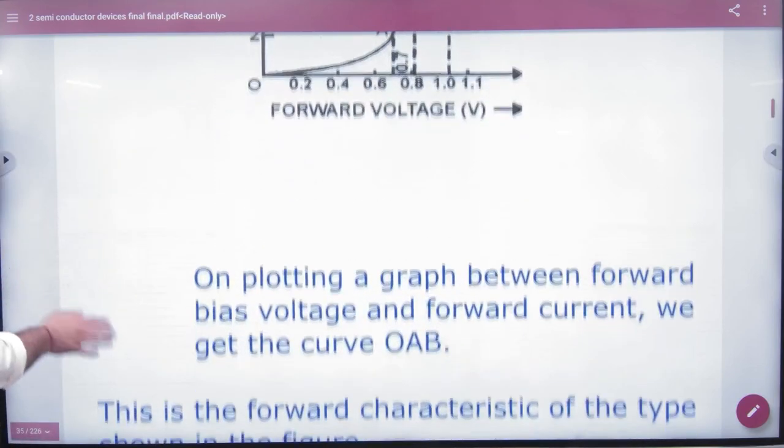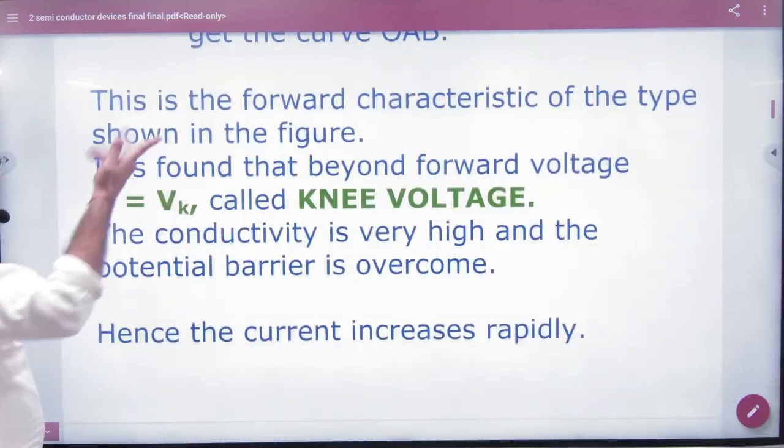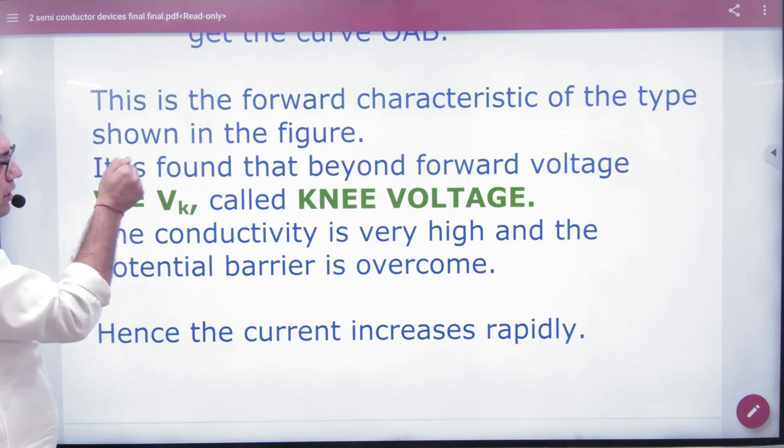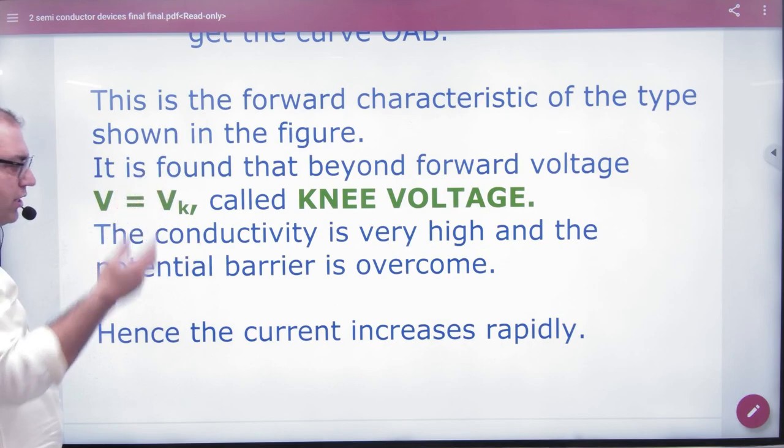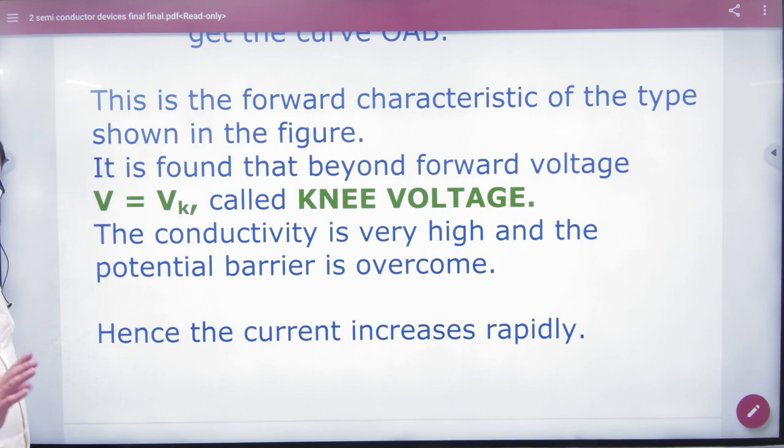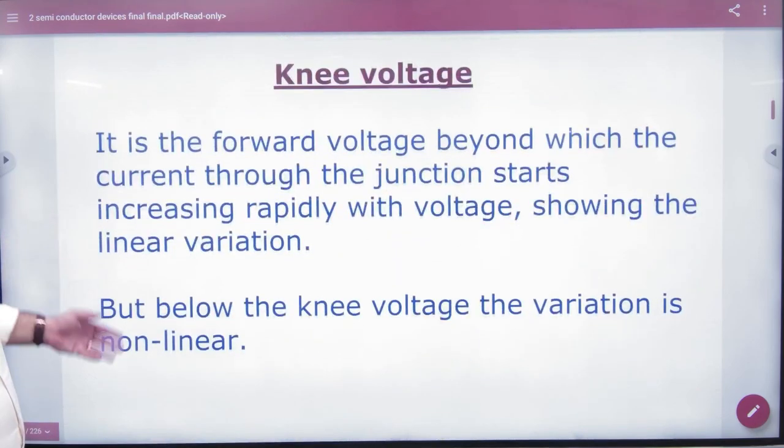So in forward biasing, this graph has to be aware of its characteristics. And when this voltage is beyond conductivity, the potential barrier is overcome. What do we call this? Knee voltage. Potential barrier has been overcome. Now the majority of carriers will move on. In that way, the knee voltage is gone. Next is reverse characteristics.